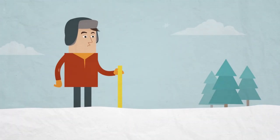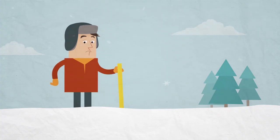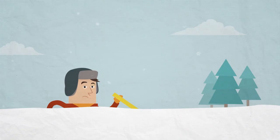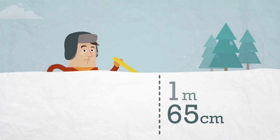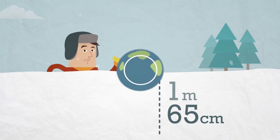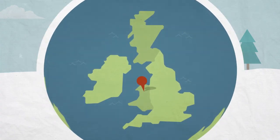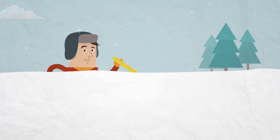We are able to measure how much snow is lying on the ground using a ruler. The deepest snow ever recorded in the UK was an enormous one metre and 65 centimetres deep. It fell in North Wales during the very snowy winter of 1947. To measure that, we would need a very long ruler.